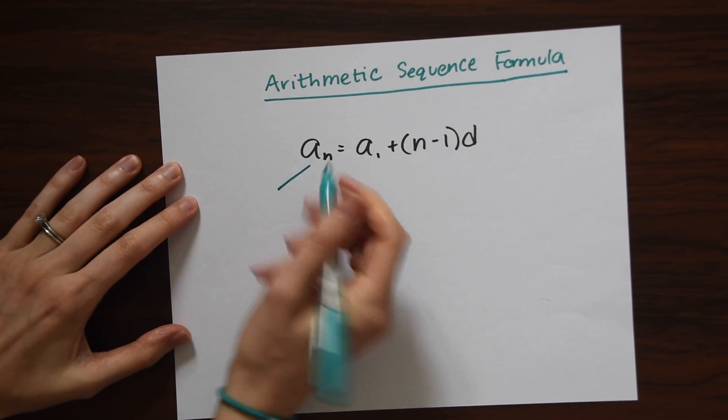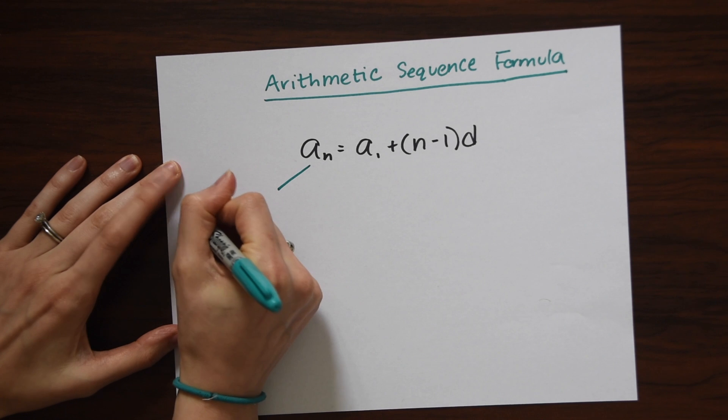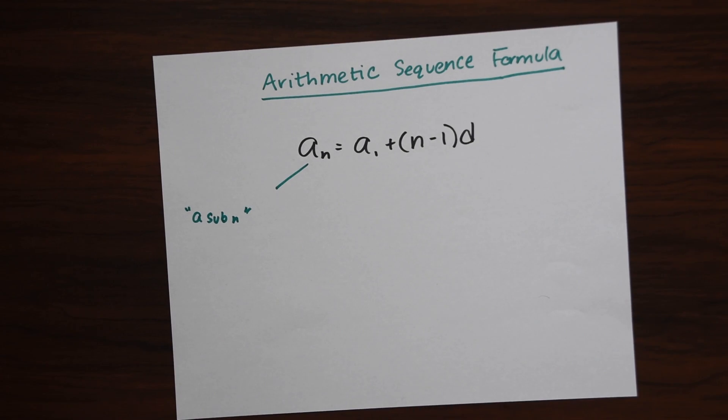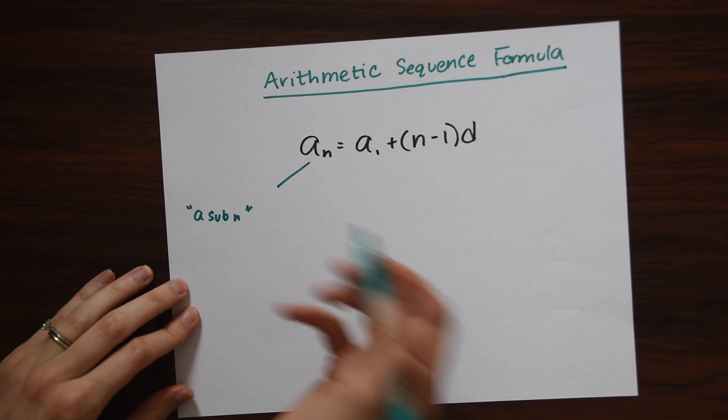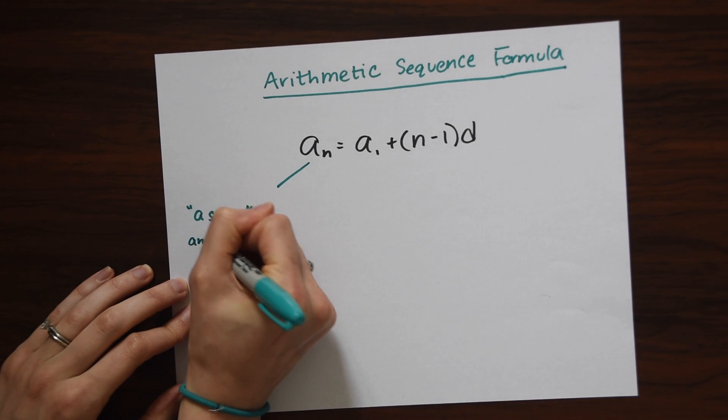So just to break down what the arithmetic sequence formula is, because there's a lot of different funky looking terms here. So let's just break down what each of these represent. So this just means A sub N. That's how this is pronounced, A sub N. And what this is, is the term we're trying to find. So what is the 123rd term? What's the value of that term? This will give us the answer.